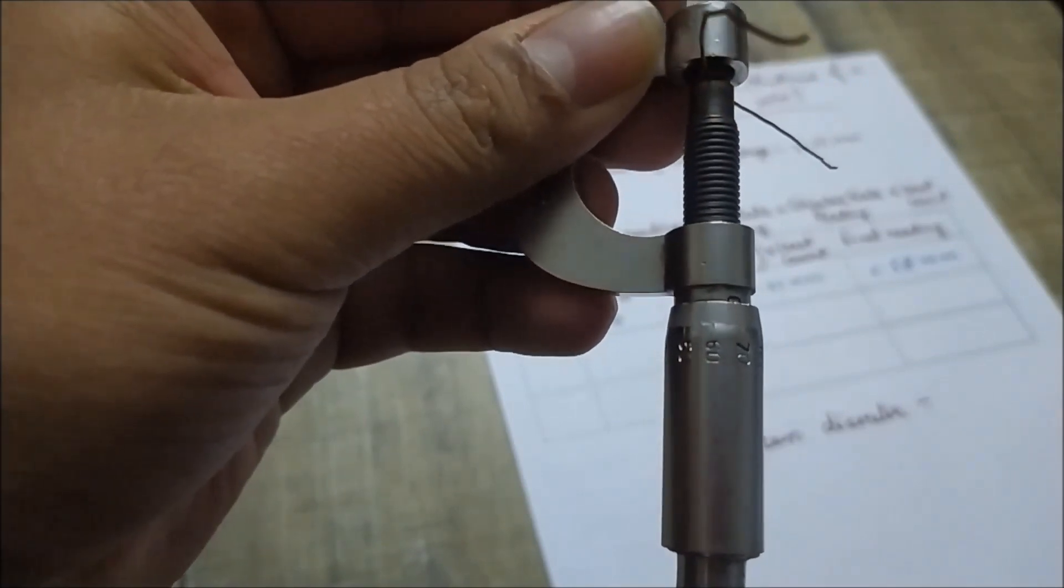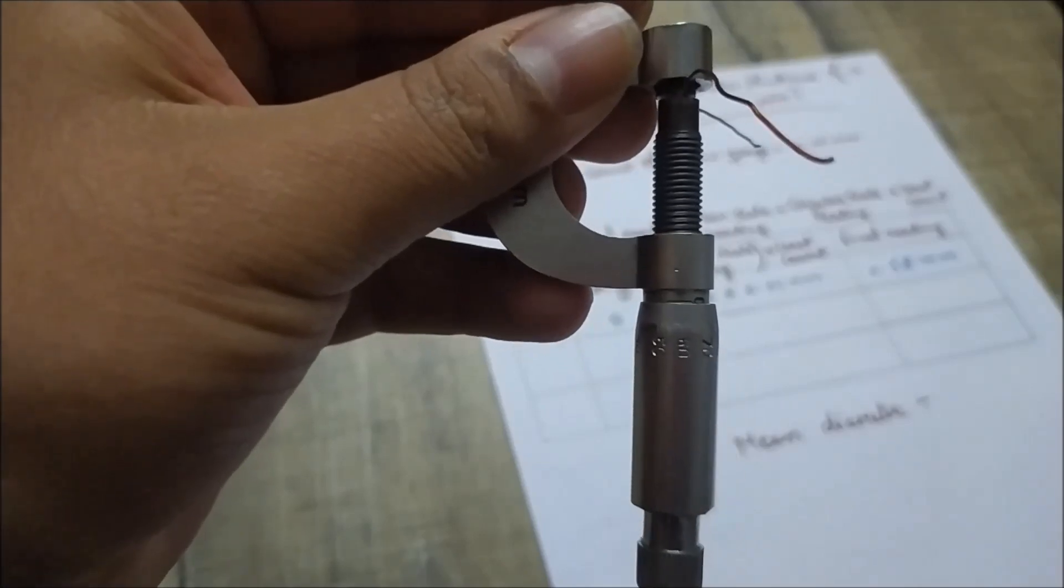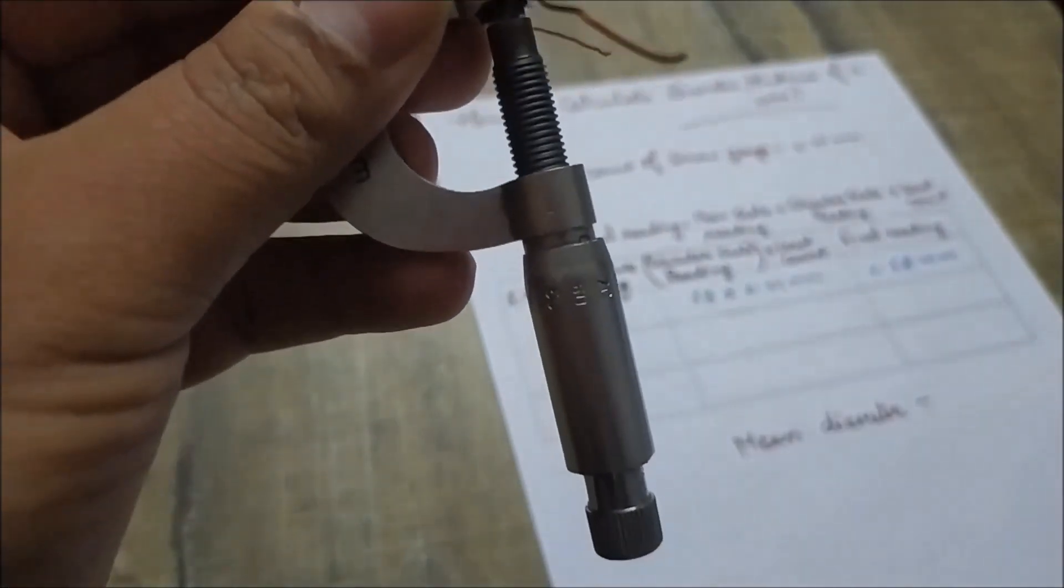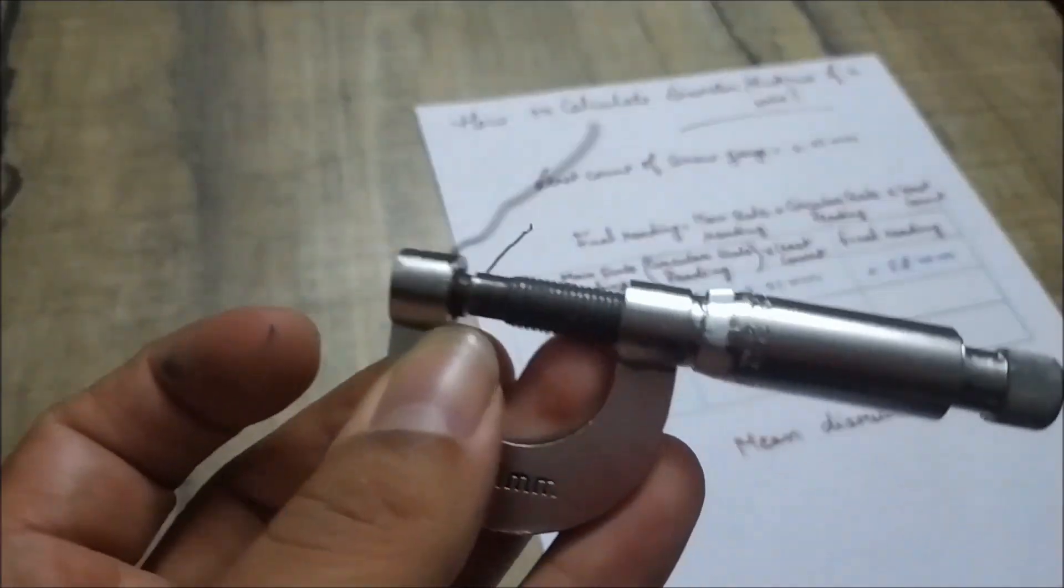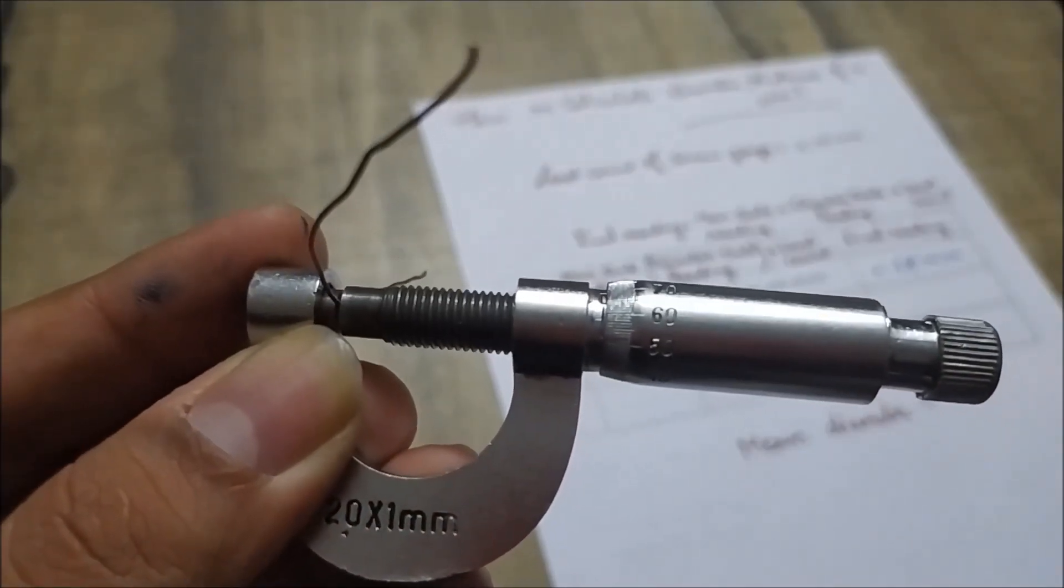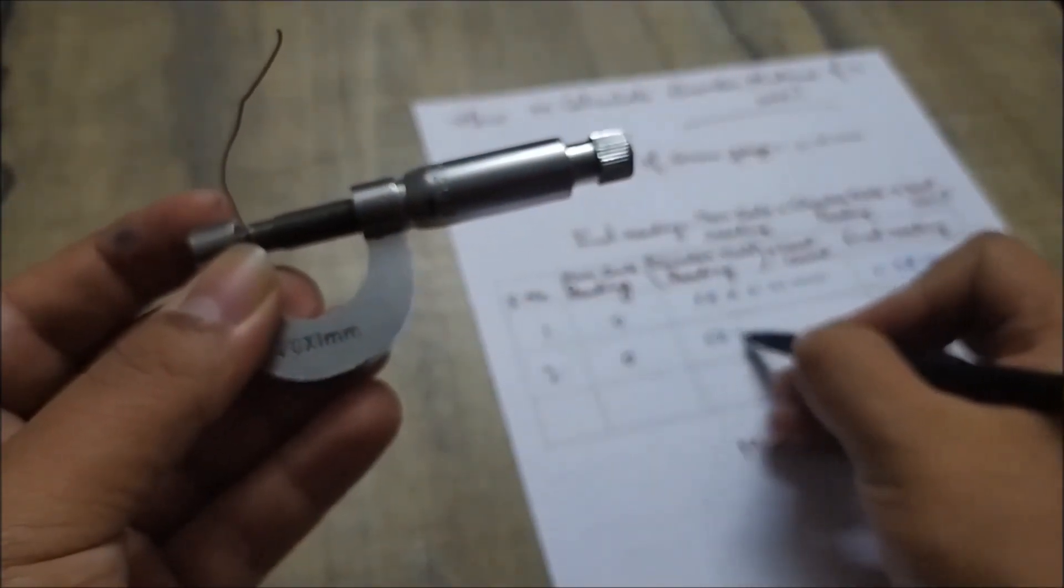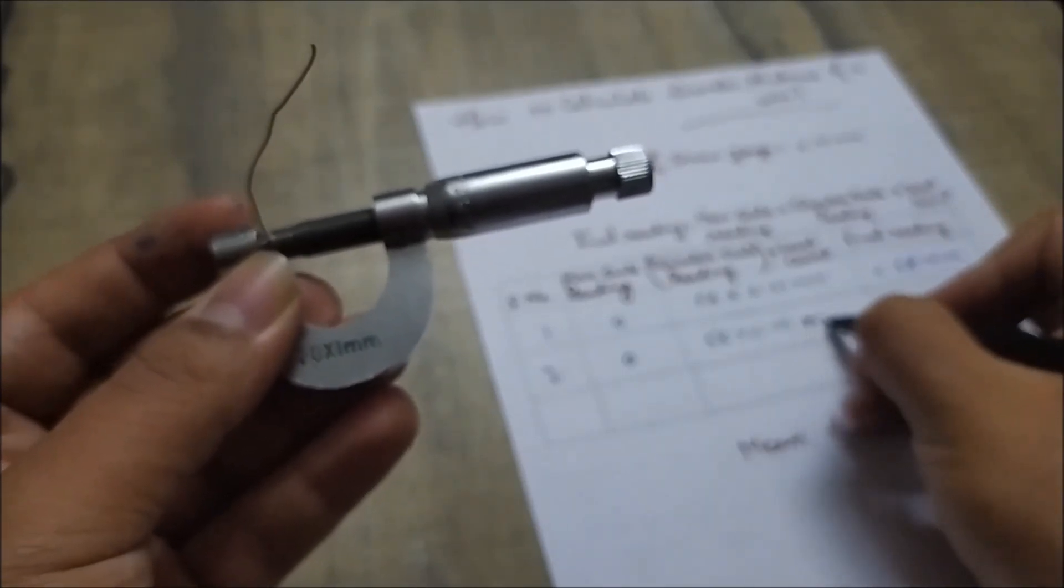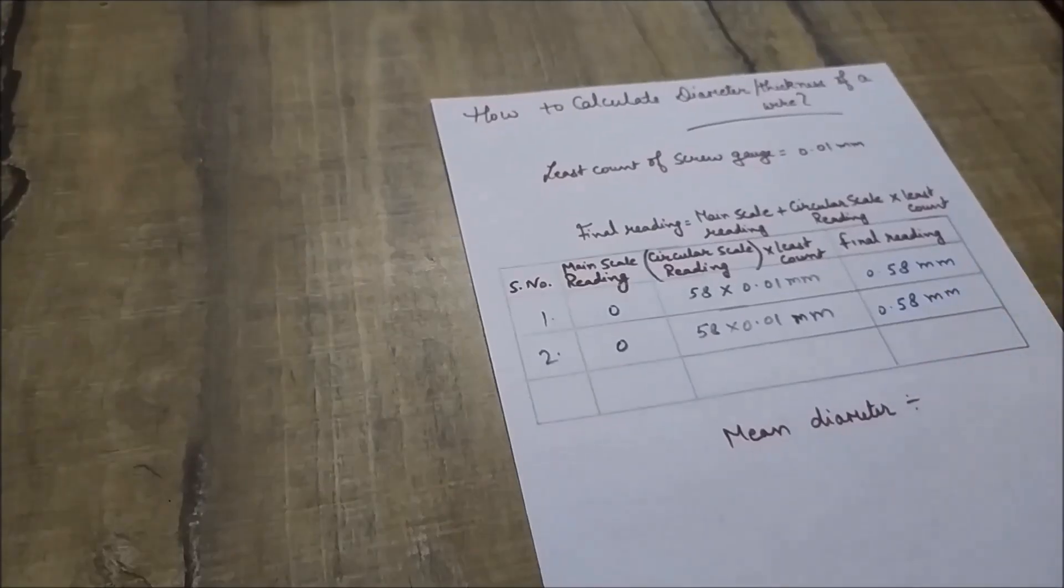So firstly we will note down the main scale. Again the main scale reading is in between 0 and 1 mm. So your main scale reading will be 0 mm. Now let's note down the circular scale reading. Again it comes out to be 58th division coinciding with the baseline. So it is again 58. Now your final reading comes out to be 0.58 mm.